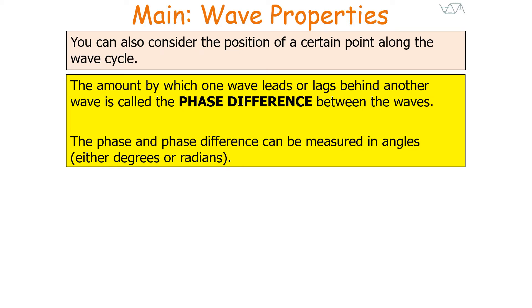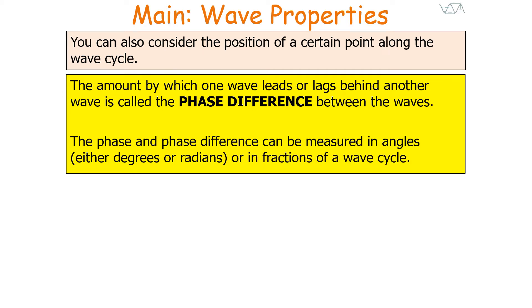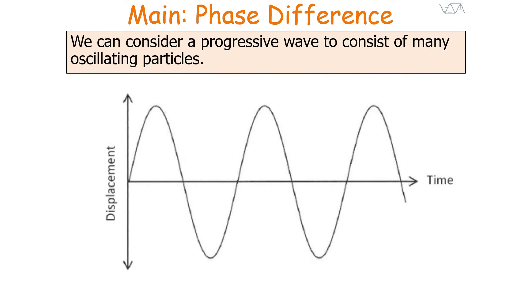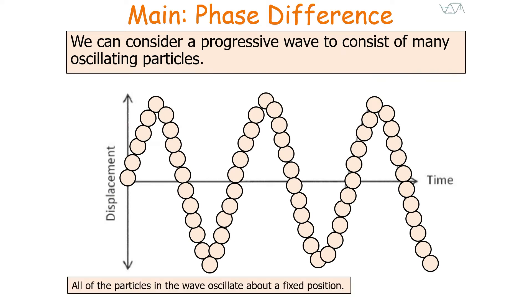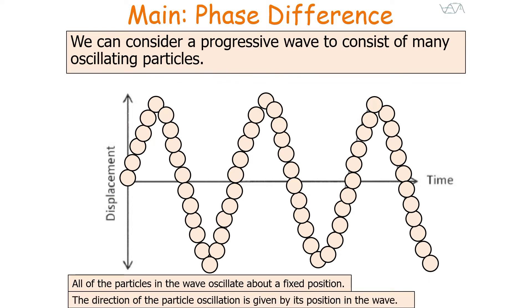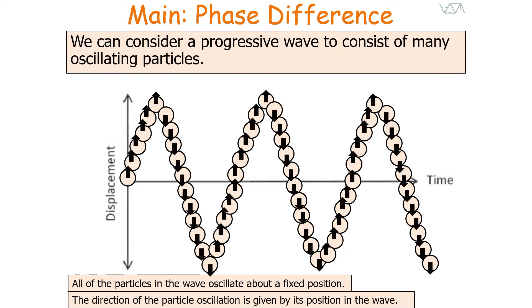The phase difference and phase can be measured in angles in units of either degrees or, more preferably, radians, but you can also measure it in fractions of a wave cycle. A progressive wave consists of many oscillating particles. All of these particles oscillate about a fixed position, and the direction of particle oscillation — either up or down — is given by its position in the wave, as shown in the diagram.